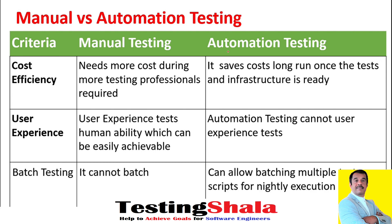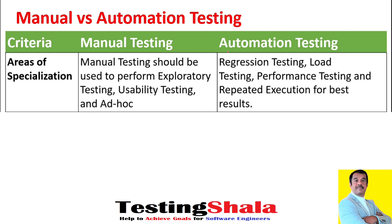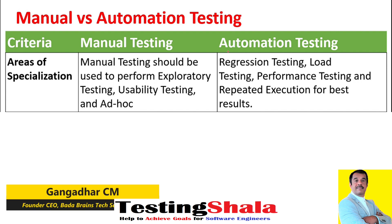The next difference is specialization — understanding when we normally use each type. Manual testing is adopted for ad hoc testing, exploratory testing, and usability testing. But in automated testing, whenever we perform regression testing, load testing, performance testing, or repeated execution, we bring in automation testing.